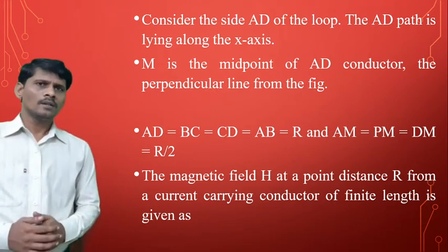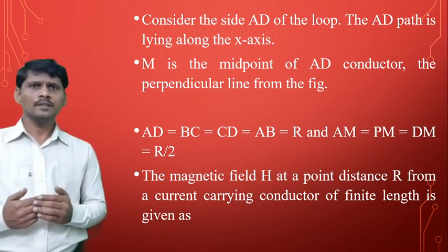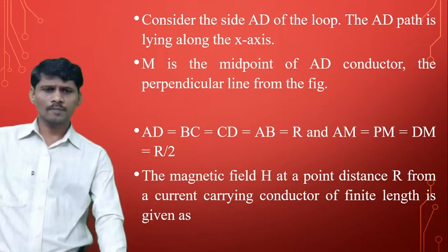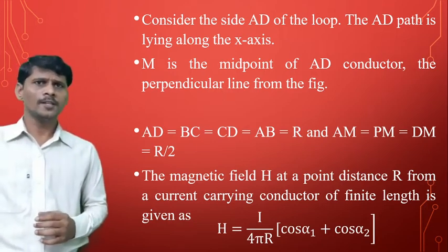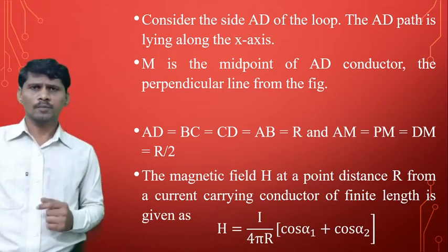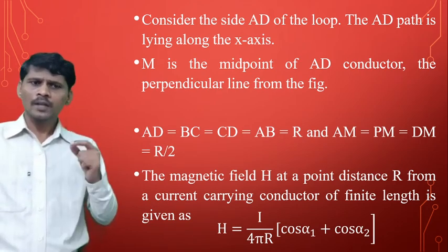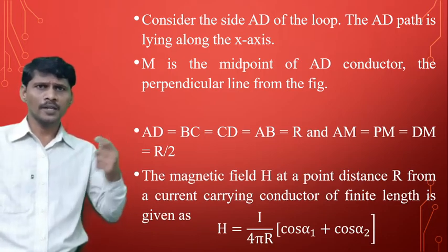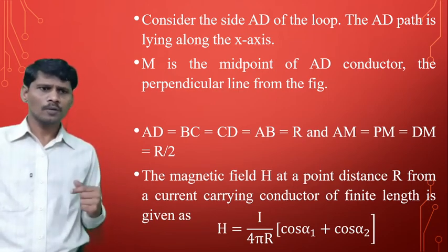We know the equation of the magnetic field intensity at a distance R from a finite current-carrying conductor. The expression already calculated is: H = I / (4πR) × (cosα₁ + cosα₂). This is the magnitude equation for H at a distance R from a finite current-carrying conductor.